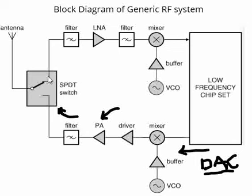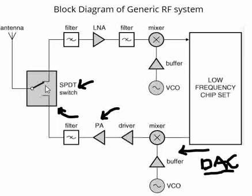At the antenna, we see something called an SPDT switch. This is called a single pole double throw switch, where this switch switches between the transmit and receive section. When we want to transmit, the switch will be on the transmit section.